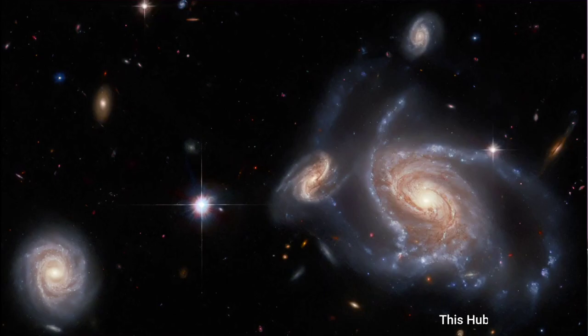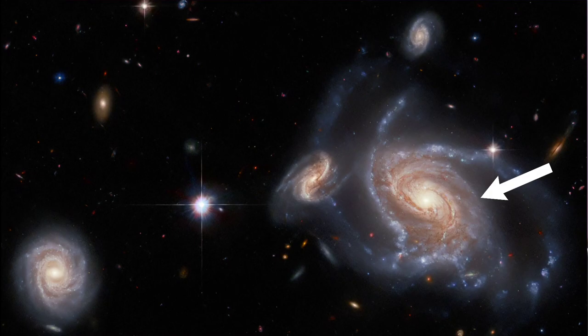In its latest cosmic masterpiece, the Hubble Space Telescope has captured a mesmerizing scene featuring four spiral galaxies participating in an intricate dance of overlapping cosmic vortices.